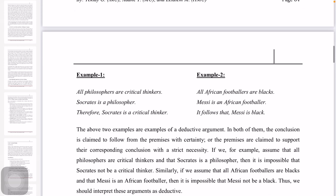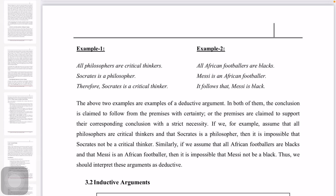For example, a common deductive argument: All philosophers are critical thinkers. Socrates is a philosopher. Therefore, Socrates is a critical thinker. Because Socrates is a philosopher, it follows necessarily that Socrates is a critical thinker.